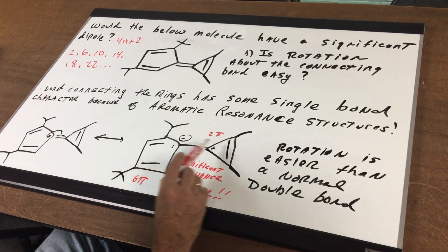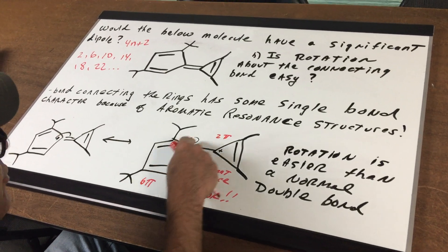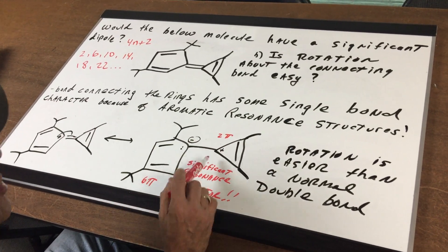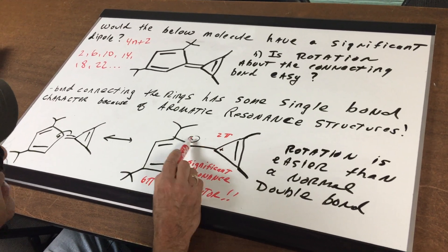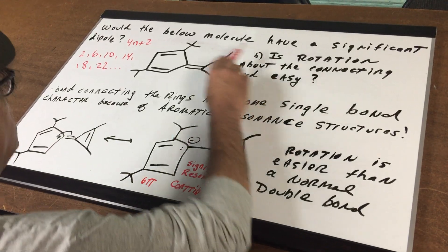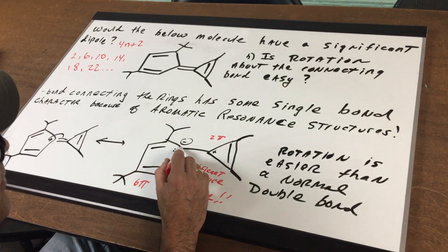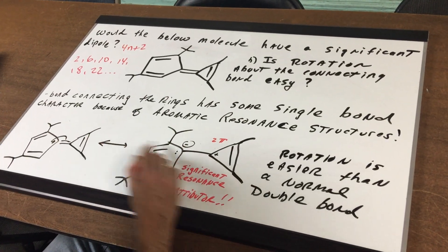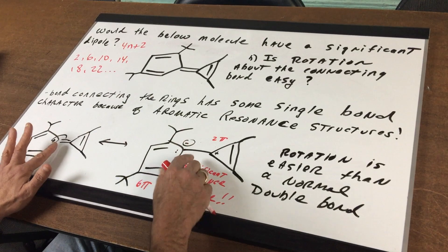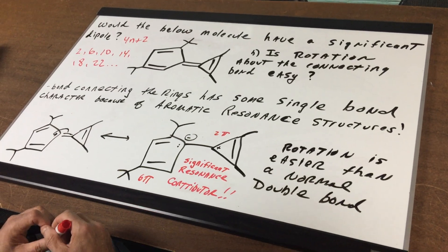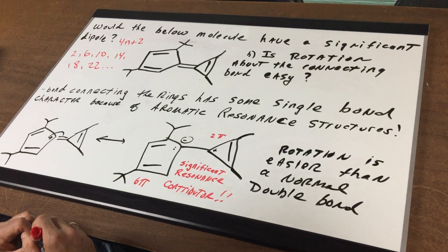That means that since both rings are aromatic, this would be a very significant resonance form. So that means if this ring is plus and this ring is minus, it would indeed have a wicked dipole. So this has a dipole and because this has got some single bond character, the actual molecule is a combination of both contributors. Rotation would be easier than a normal double bond.